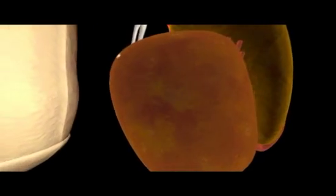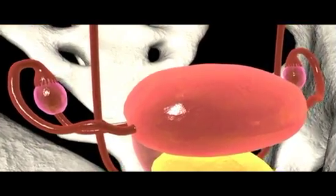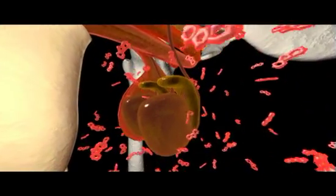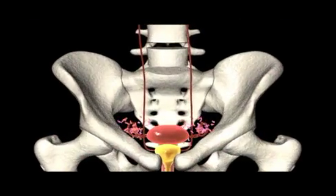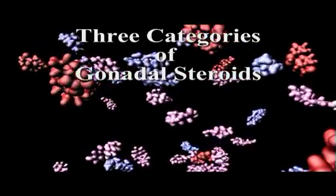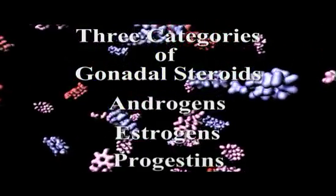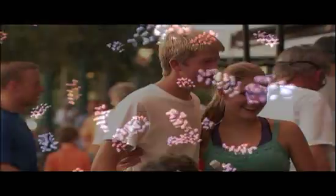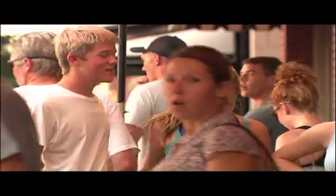The gonads — testes in males and ovaries in females — are important endocrine organs, producing steroid hormones that affect growth and development, as well as regulating reproductive cycles and behaviors. There are three major categories of gonadal steroids: androgens, estrogens, and progestins. Both males and females have all three types, but in different proportions.